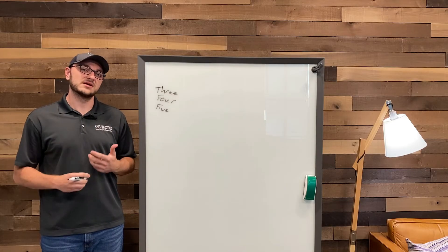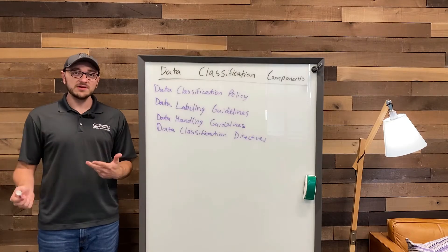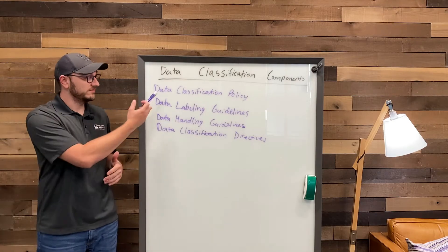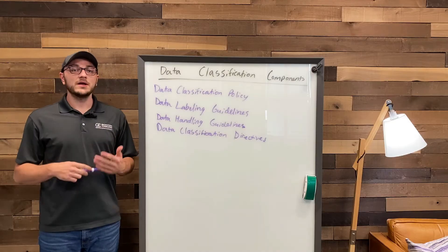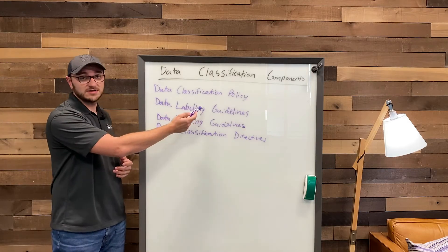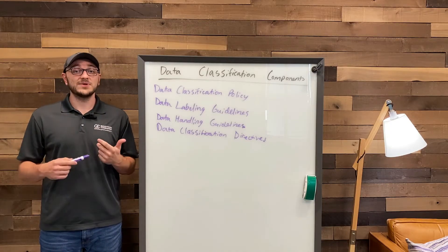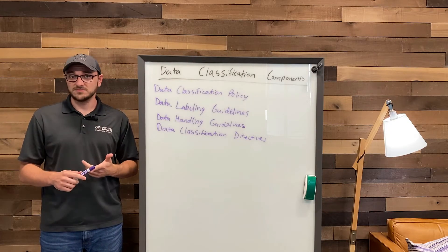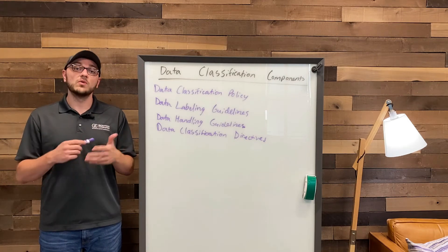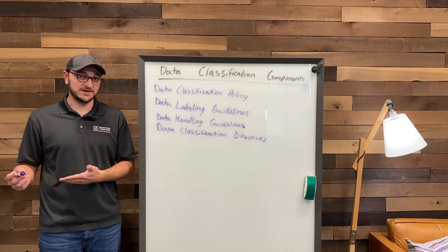Now let's take a look at the different components of a data classification framework. There are usually four different parts, and the first and most important part is the data classification policy or scheme. This policy is extremely important because it defines the different levels and describes in meaningful terms to the organization what those different levels mean and what types of data need to be classified in those levels.